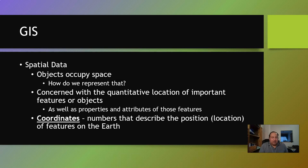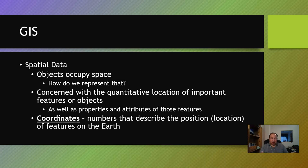So what is this data that I'm speaking of? Objects occupy space, and we know that because we can find the location of things — we've talked about that before with coordinates and coordinate data. The big thing for us is to figure out the quantitative location of important features or objects. Spatial data helps give us both a picture of what's there as well as a location, and it's important to get both.